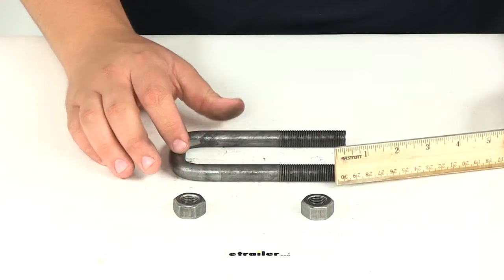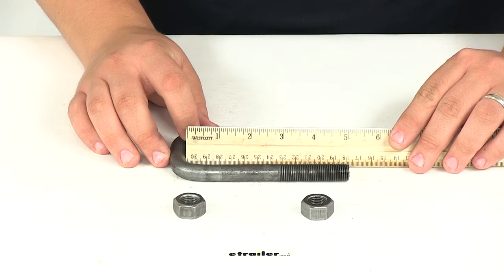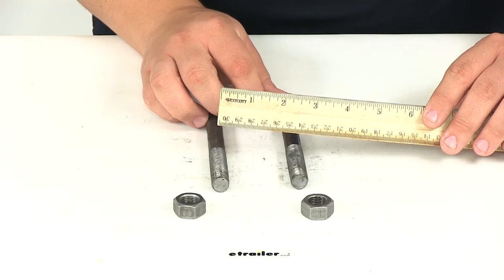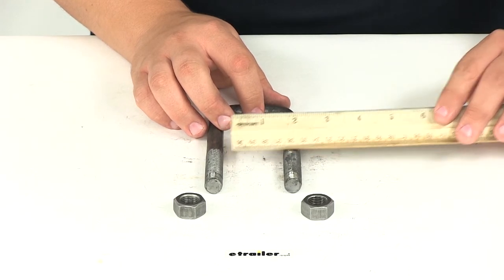The length that we have from the bottom of the cross bar to the bottom of the U-bolt is going to measure five inches, and then the width that we have between the two U-bolt posts is going to measure one and three quarters of an inch.